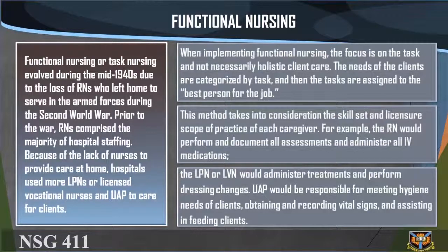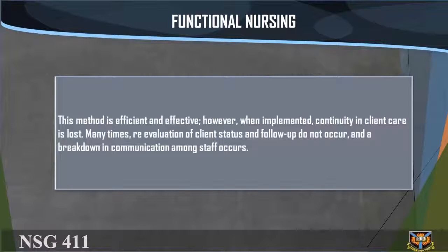This method takes into consideration the skill sets and licensure scope of practice of each caregiver. For example, the RN would perform and document all assessments and administer all IV medications; the LPN or LVN would administer treatments and perform dressing changes; UAP would be responsible for meeting hygiene needs of clients, obtaining and recording vital signs, and assisting in feeding clients. This method is efficient and effective; however, continuity in client care is lost, reevaluation of client status and follow-up often do not occur, and a breakdown in communication among staff can occur.